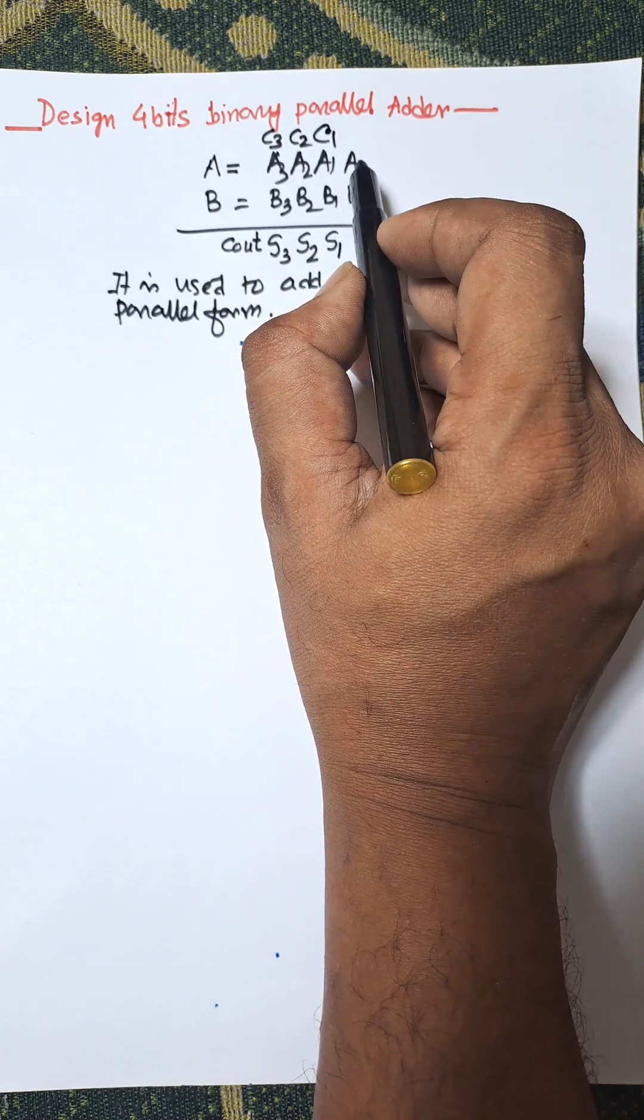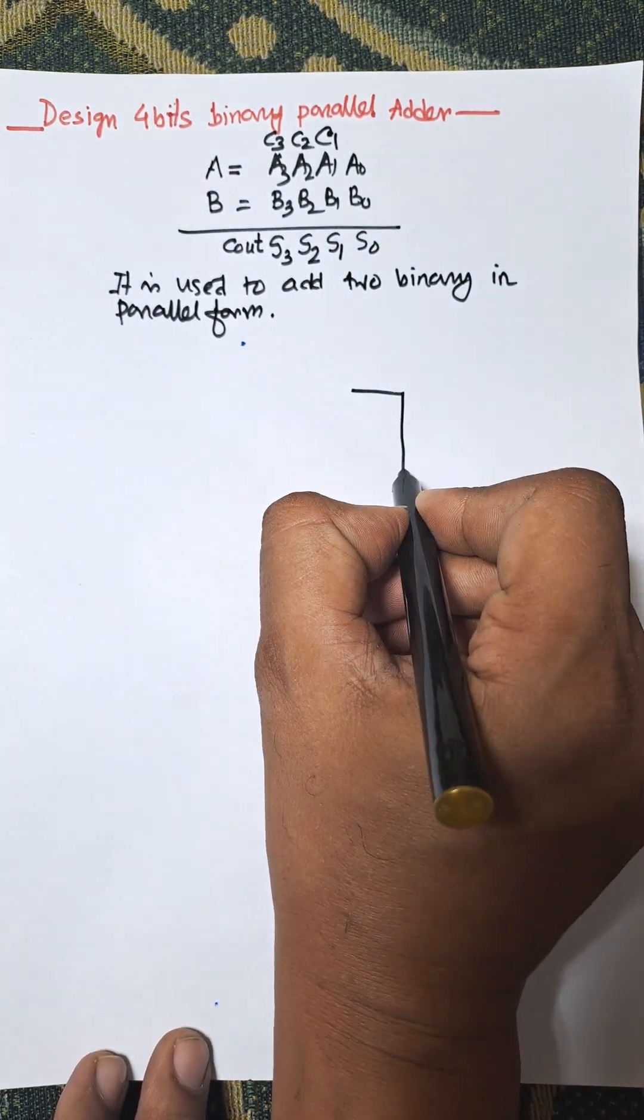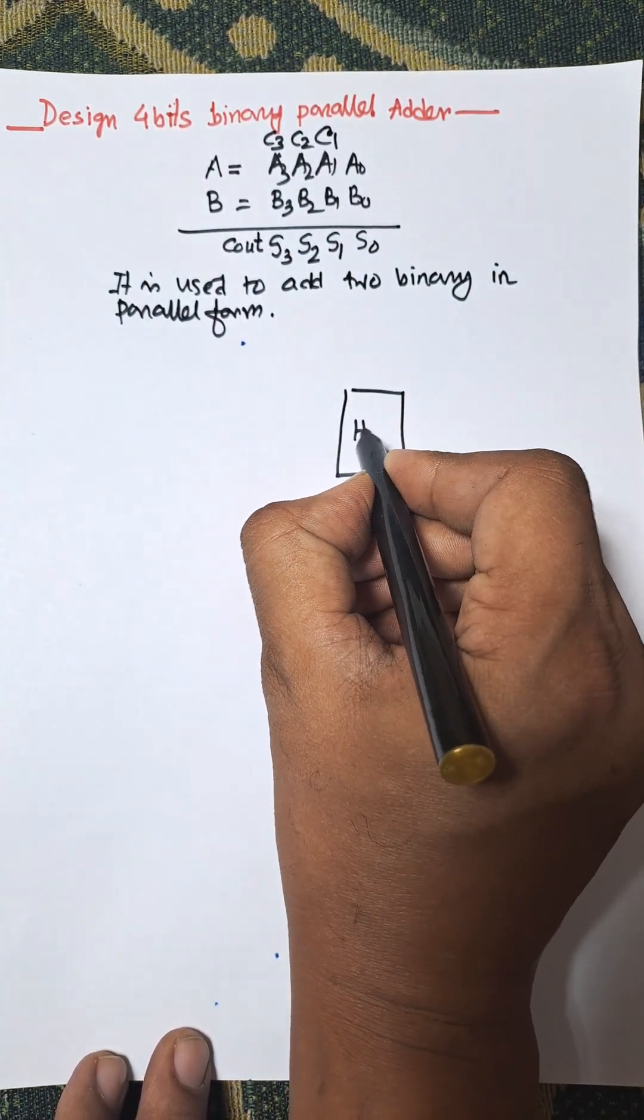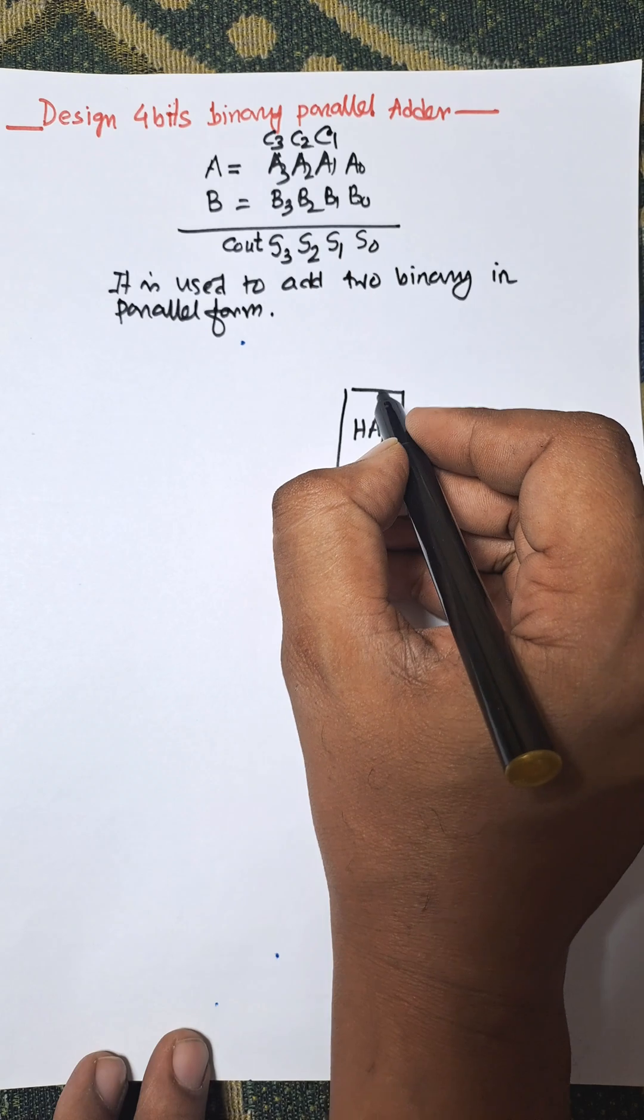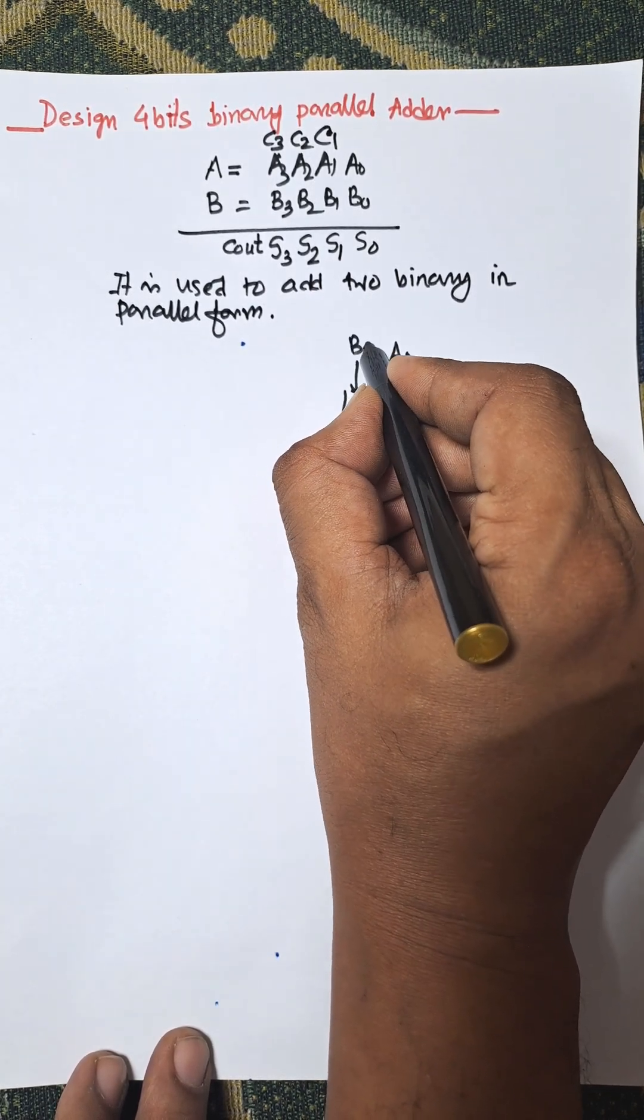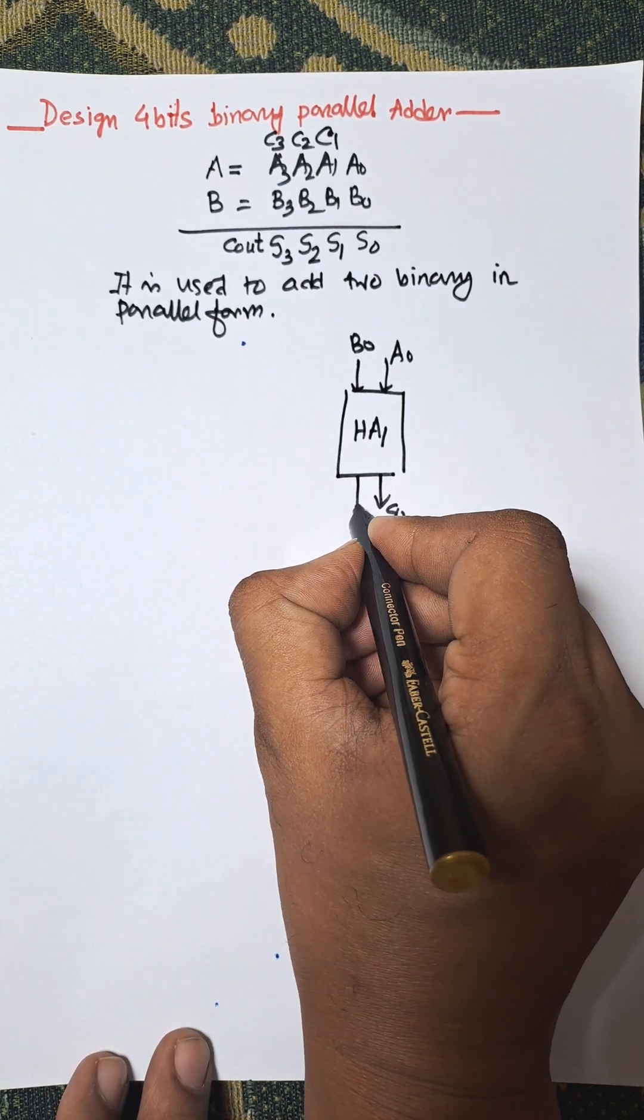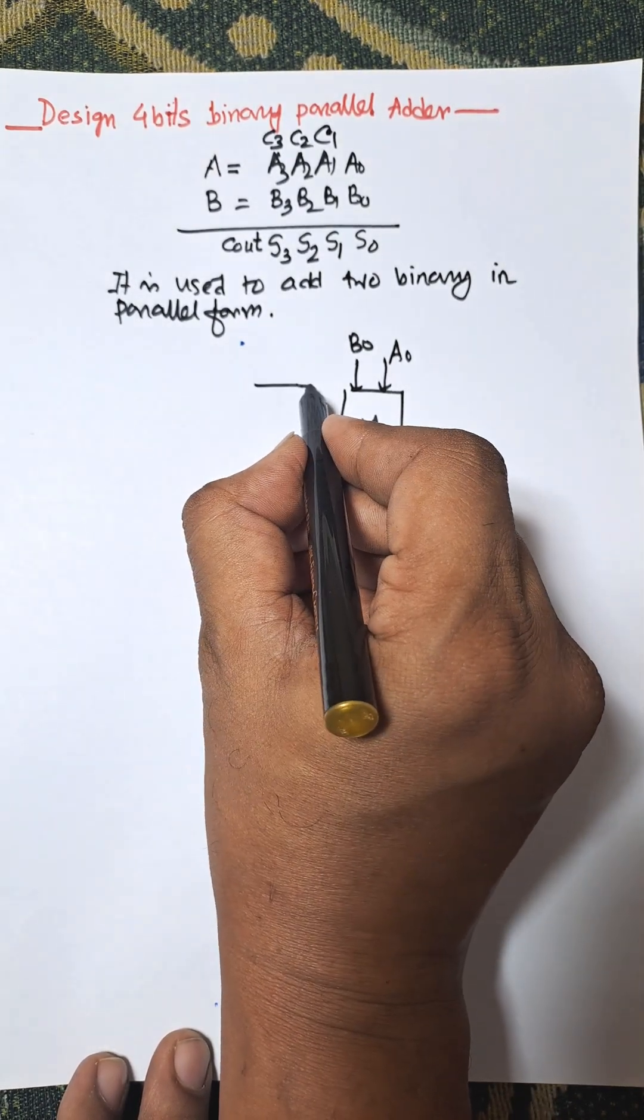So this is the half adder, half adder 1. It consists of A0 and B0, and it will produce sum S0, and the carry goes to the next adder, which is the full adder.